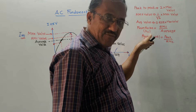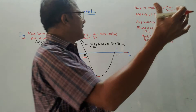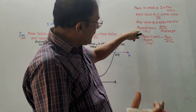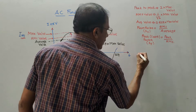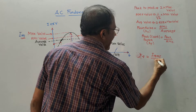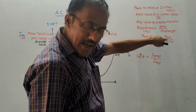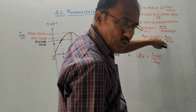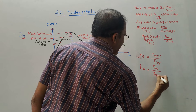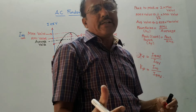The form factor, denoted Kf, is the ratio of RMS to average value. So for current: Kf = I_rms / I_average. The crest factor, denoted Kp, is defined as the ratio of peak value to RMS value: Kp = Im / I_rms. These are the basic terms related to AC quantities; we'll now solve numericals to apply these formulas.